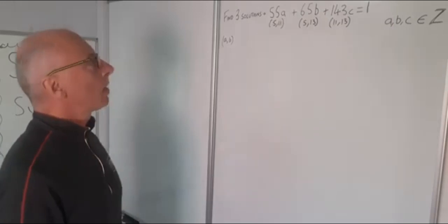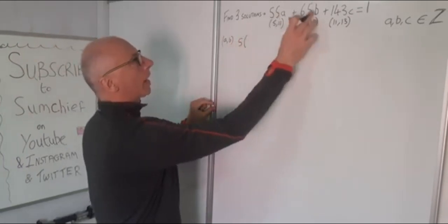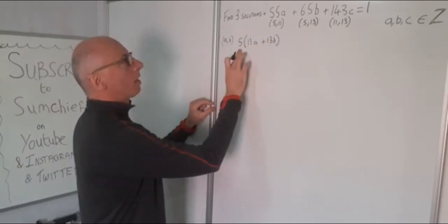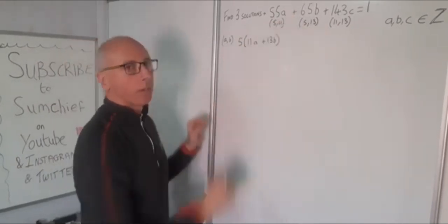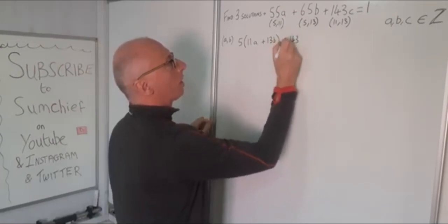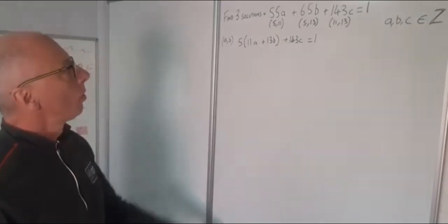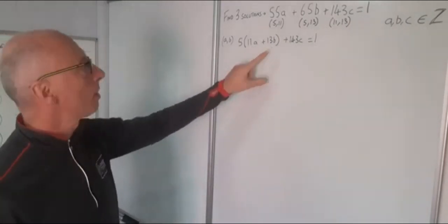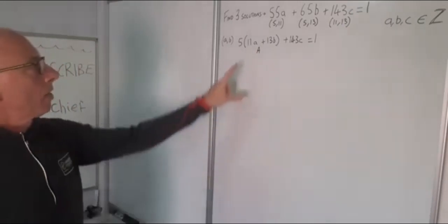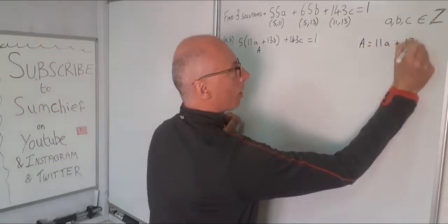A and B has got a matching factor of 5. So I'm going to rewrite this equation, taking the 5 out of the A and the B, and write this as 5 times (11A plus 13B), then add 143C equals 1. Now I'm going to call this part in brackets capital A. So A equals 11A plus 13B.